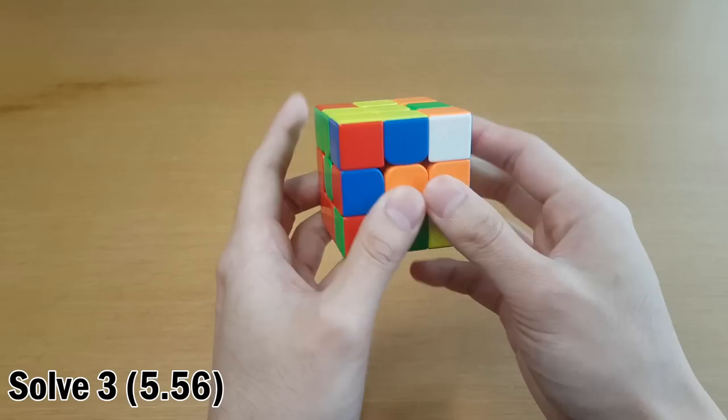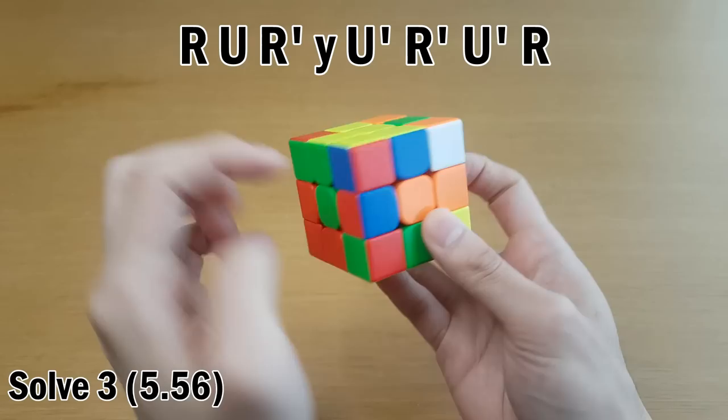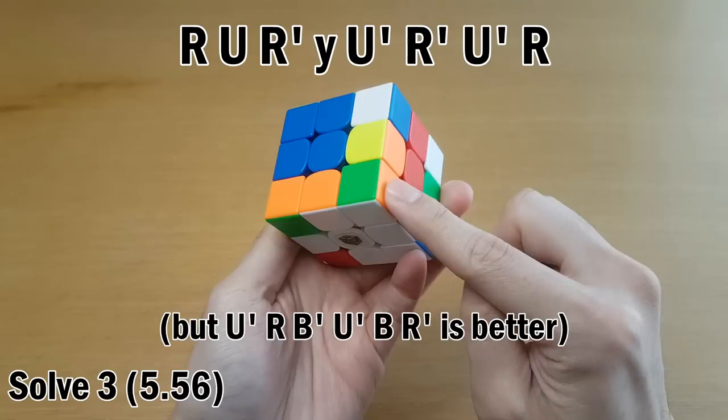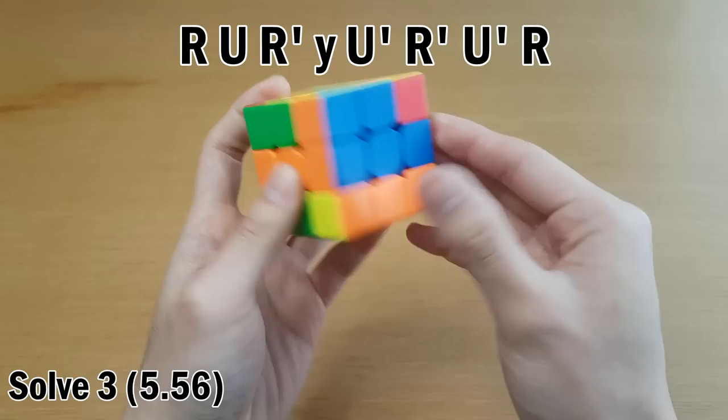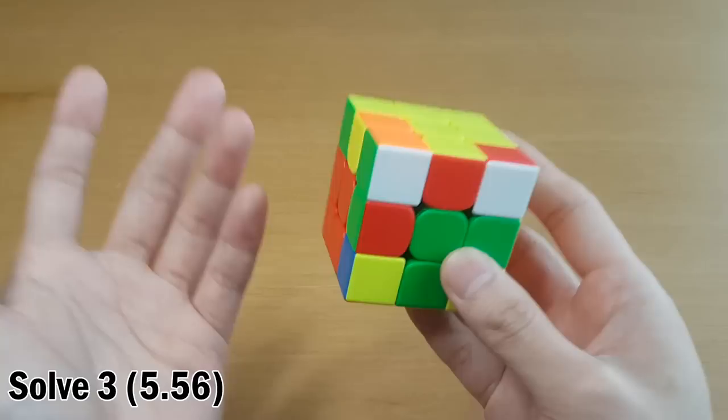We have this corner that needs to go with the solved edge, and this edge that needs to go with the solved corner. So he actually pairs them up, the orange-blue and red-blue pieces, and then inserts them over here to the orange-blue corner slot and the blue-red edge slot for a pseudo-pair. And now he does this, and look at that. That is two F2L pairs solved. This is pseudo-slotting. So be honest, guys, Max Park doing pseudo-slotting. Does that not scare you?